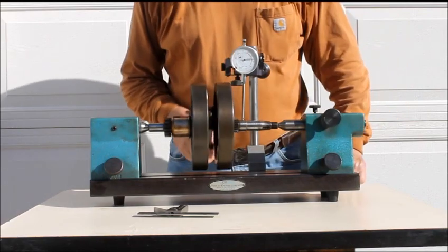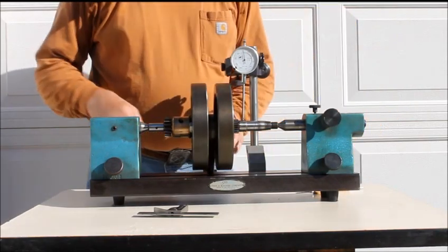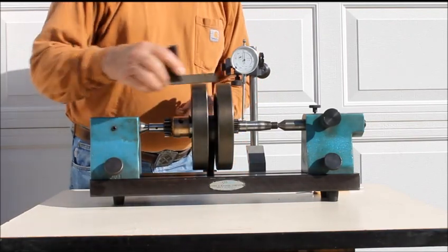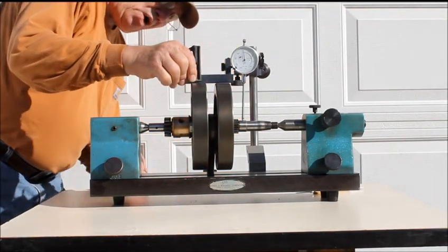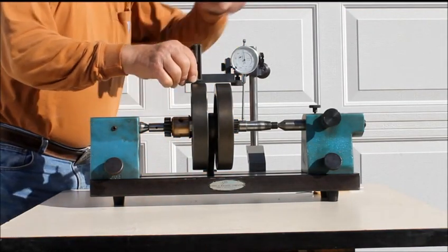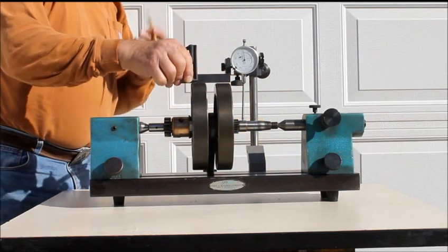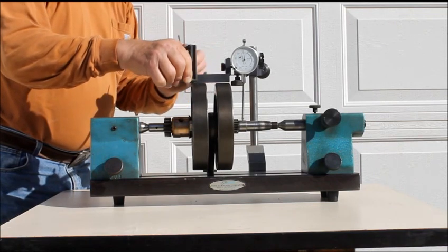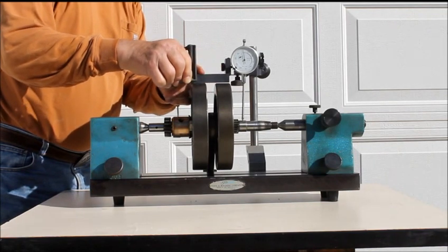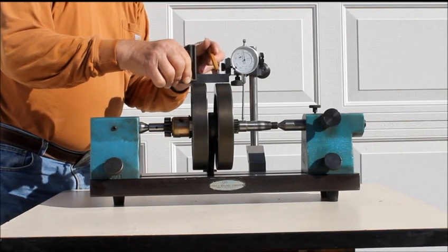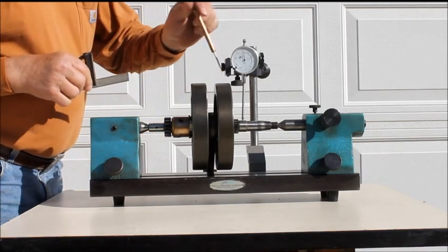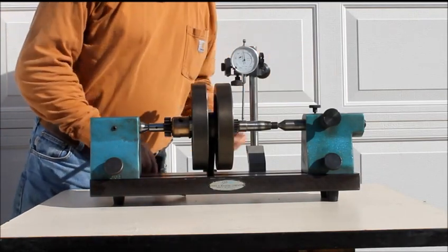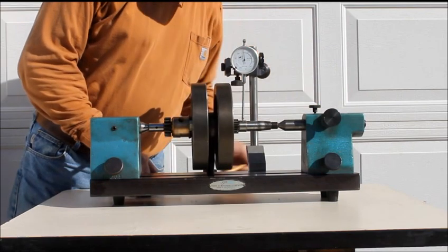There's another thing you can do to check these, and that's using a straight edge across the surface. Now I'm hoping you can see the white light under this side. This gap, if I could hold it steady, this gap is probably about 41 thousandths. The wheels, the flywheels, are more out of alignment than the timing pinion shaft itself.